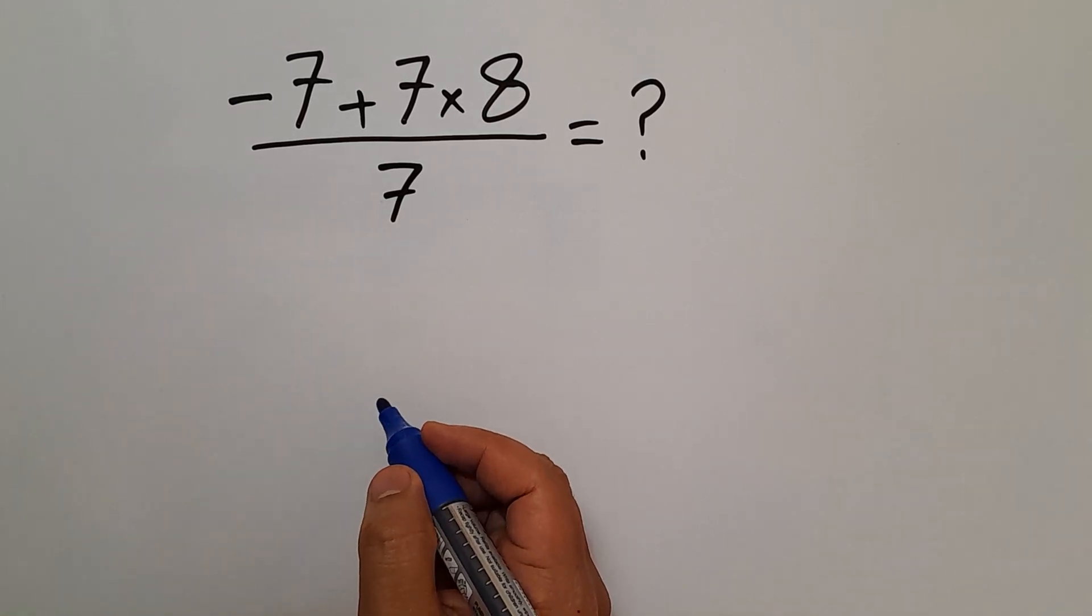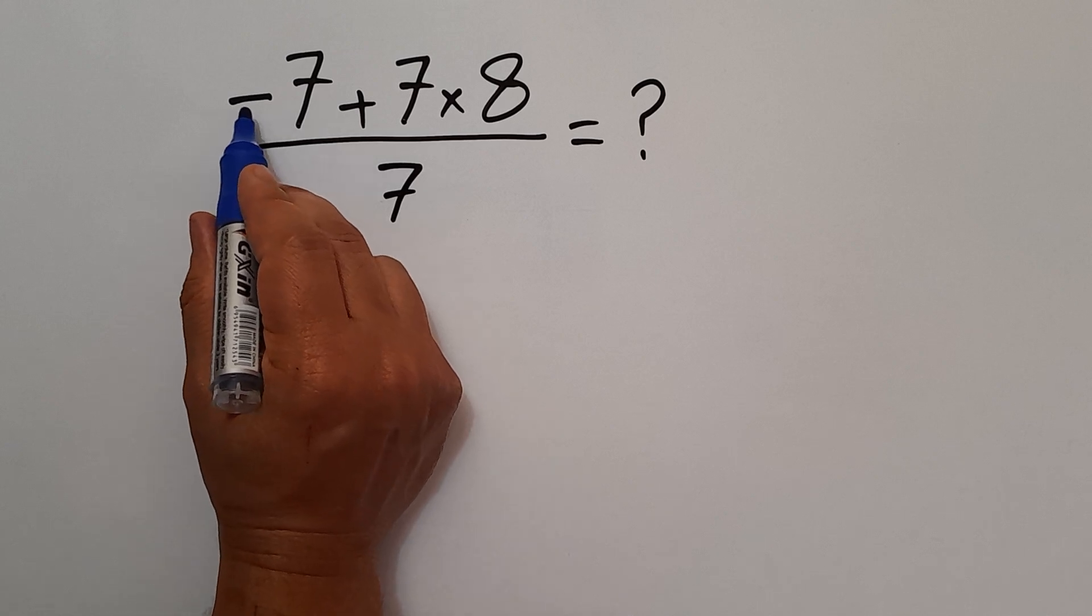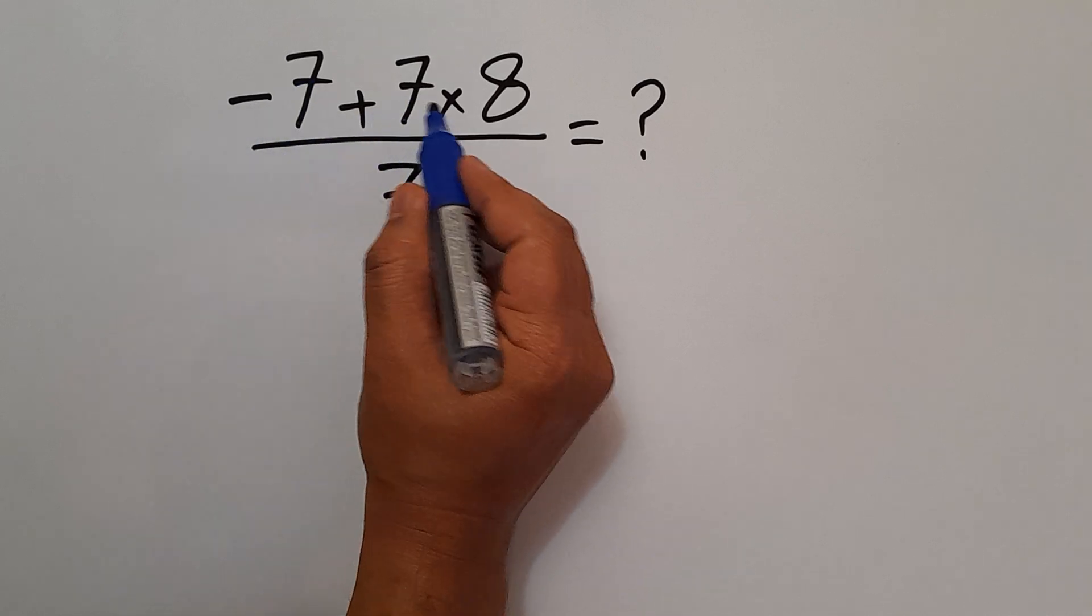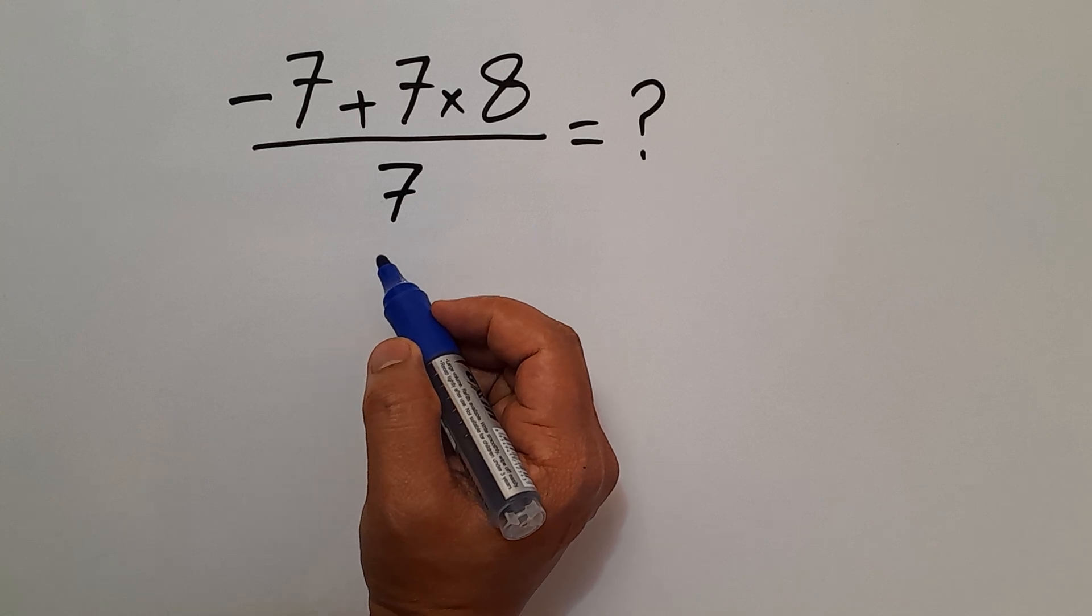Hey guys and welcome to this video. In this video we want to find the value of this fraction we have here: negative 7 plus 7 times 8 divided by 7. Are you ready to solve? Let's go ahead and get started.